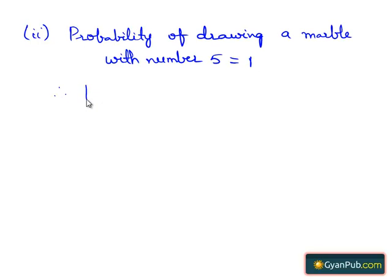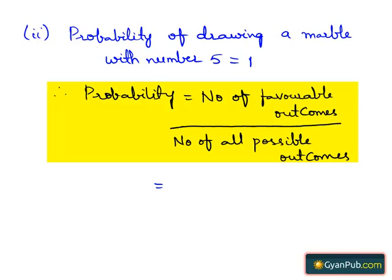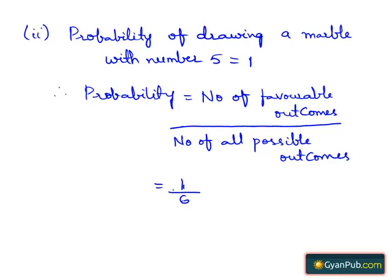Since we know the formula for probability, which is equal to number of favorable outcomes by number of possible outcomes, which is equal to 1 by 6, since the number of all possible outcomes are 6. So the probability of drawing a marble with number 5 is equal to 1 by 6.